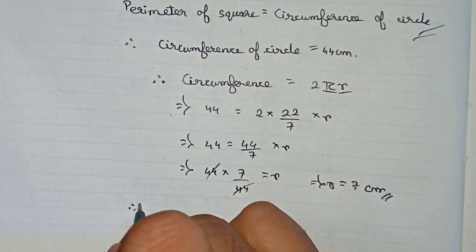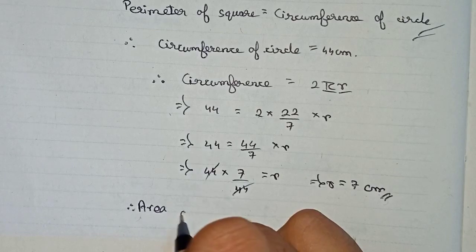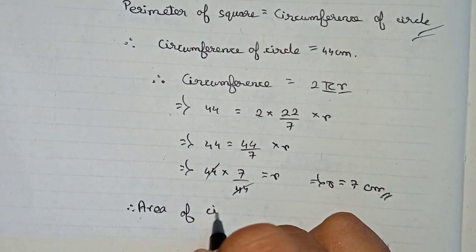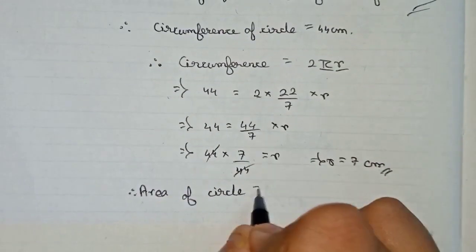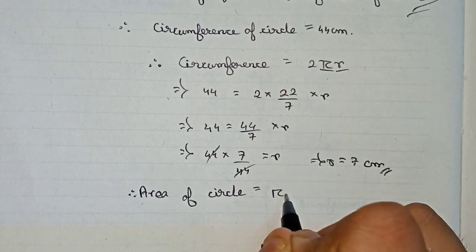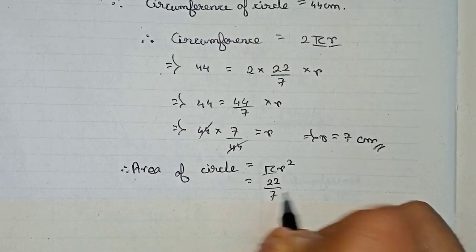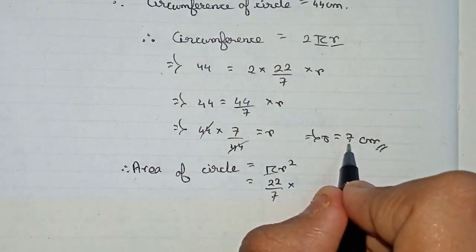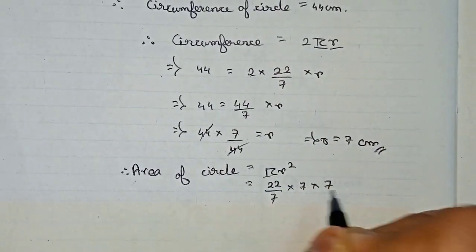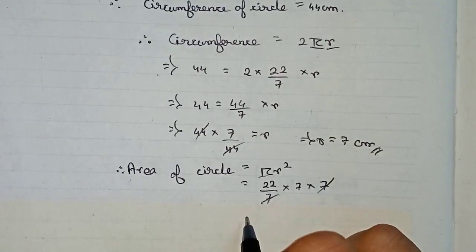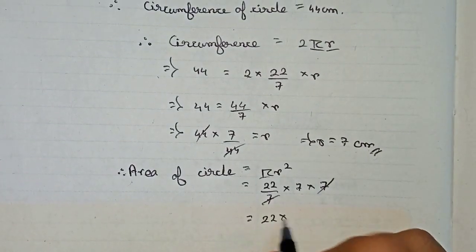The value is equal to πr², that means 22 by 7 into r square, that mean 7 into 7. So 7 strikes out, 22 into 7 remaining. So 22 into 7, it will become 154 centimeter square.